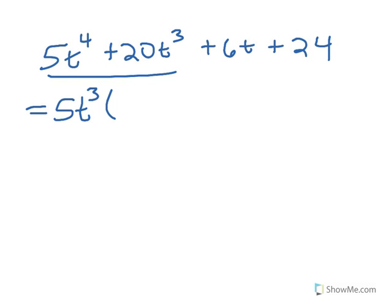Whenever you have a higher power, any lesser power is a factor of it. So t to the fourth has factors that include t cubed, t squared, and t. Take 5t to the fourth and divide it by 5t cubed—the only thing left standing is t. Take 20t cubed and divide it by 5t cubed—the t cubes cancel out, 20 divided by 5 is 4.